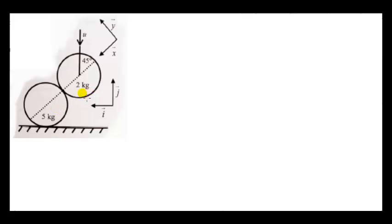A second sphere of mass two kilograms falls vertically onto this sphere at an angle of 45 degrees. The speed immediately before impact is U. The five kilogram mass is constrained to move entirely in the horizontal direction, so immediately after impact the five kilogram mass moves to the left.